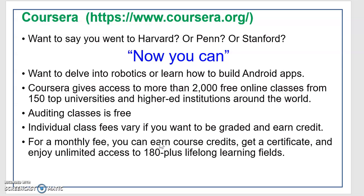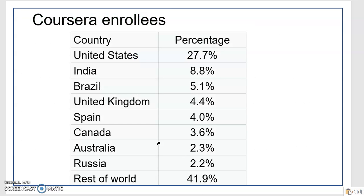Course auditing on Coursera is free. If you want a certification, you need to pay a small amount like 20 to 30 dollars for the examination, that is for crediting the course. According to Wikipedia statistics, Coursera enrollees are mostly from the United States at about 27 percent, India is the second largest consumer at 9 percent, followed by Brazil, United Kingdom, Spain, Canada, Australia, Russia, and the rest of the world at about 40 percent.